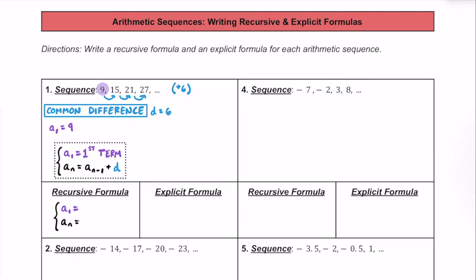For this particular sequence, we're going to say a sub 1 is equal to 9, or the first number in the sequence. And then a sub n, or any number in the pattern, is going to be equal to a sub n minus 1, the previous number, plus the common difference, which in this case is going to be 6.